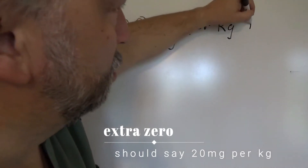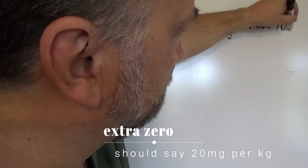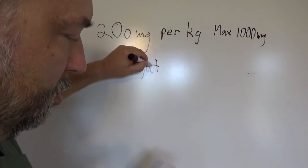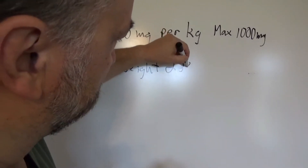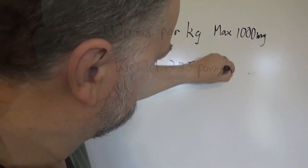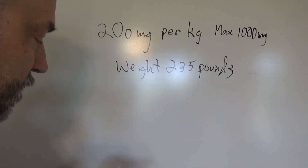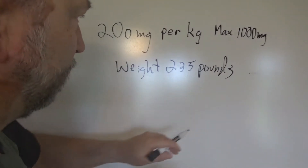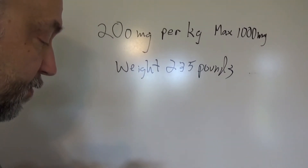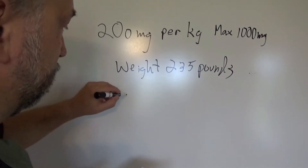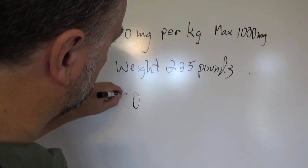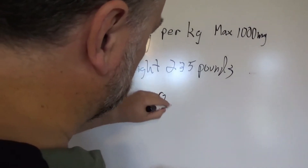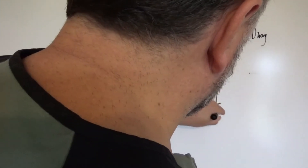The max dose is 1000 milligrams. The patient's weight is 235 pounds and we're to give 20 milligrams per kilogram with a max of 1000. So first of all, let's convert that. You take the 235 pounds divided by 2.2, and you get 106.8, which we'll round to 107 kilograms.